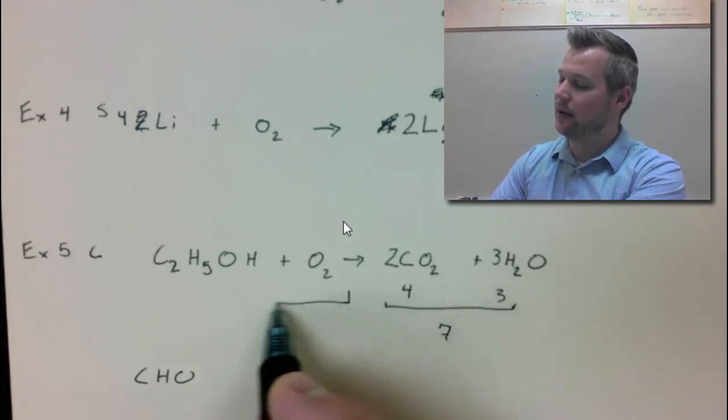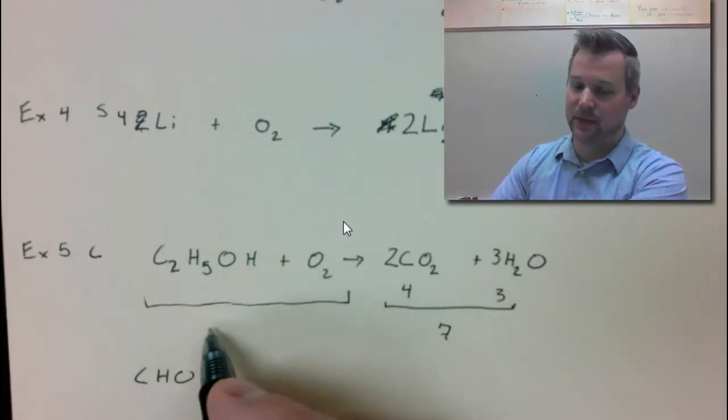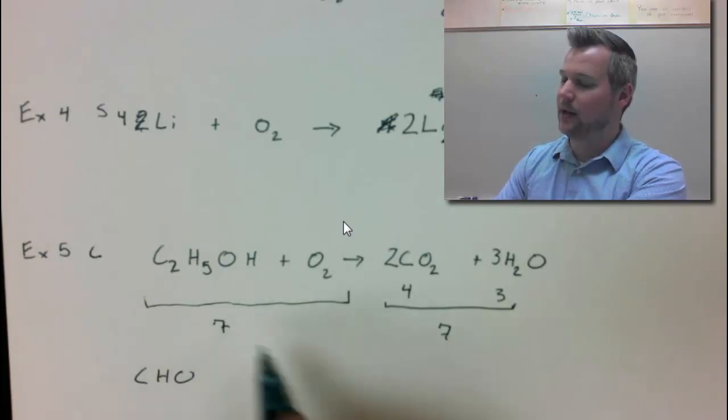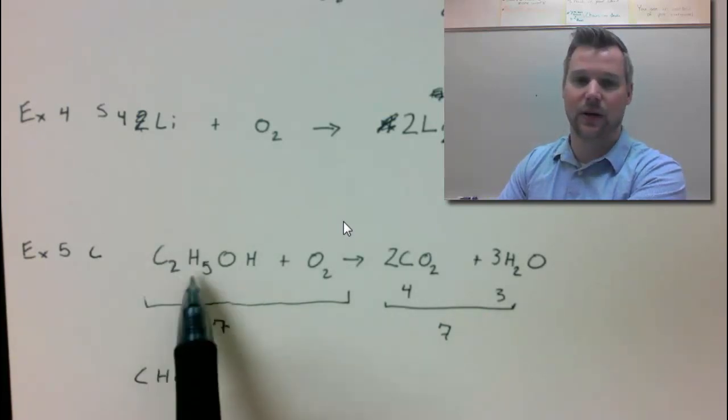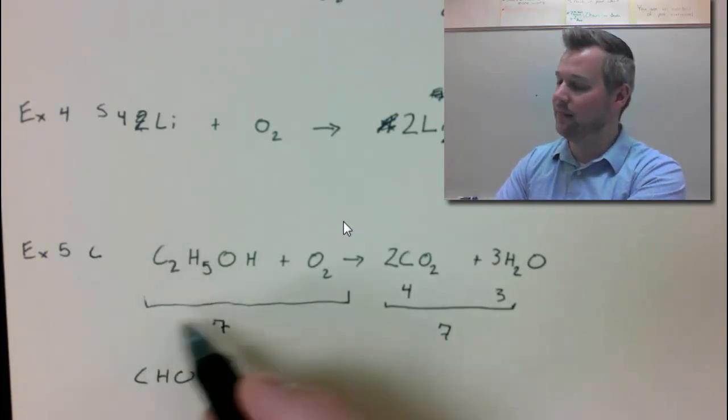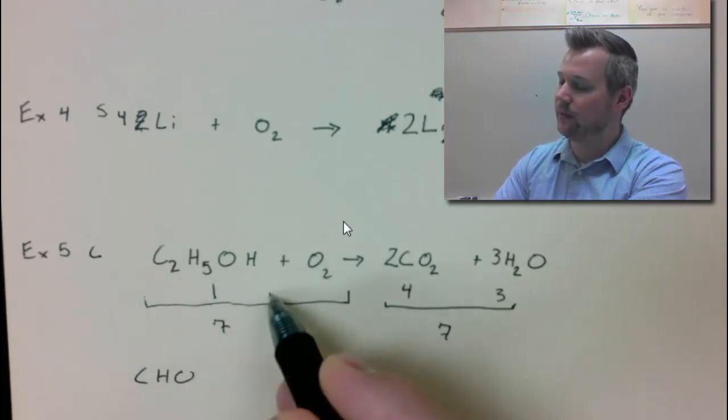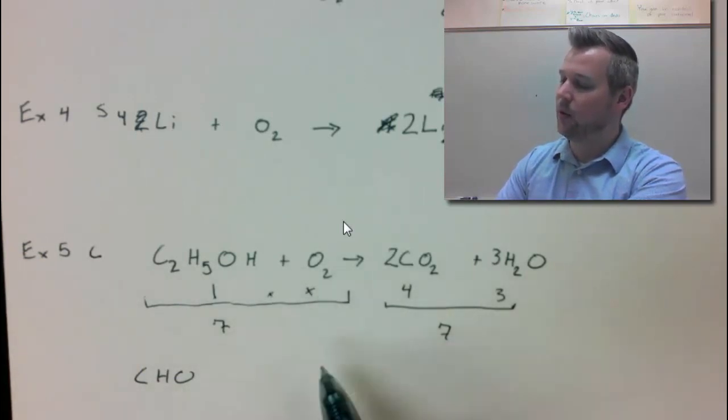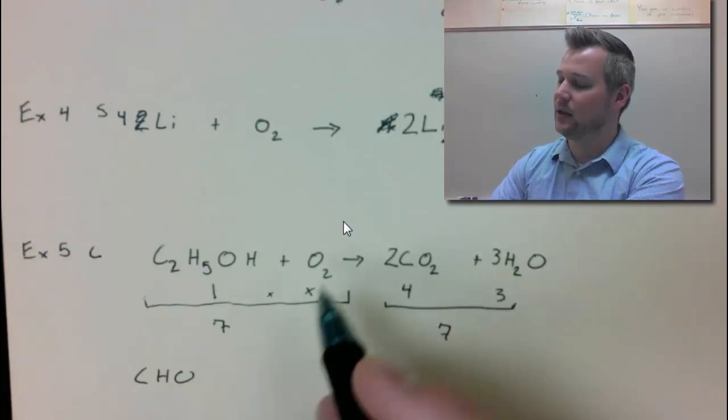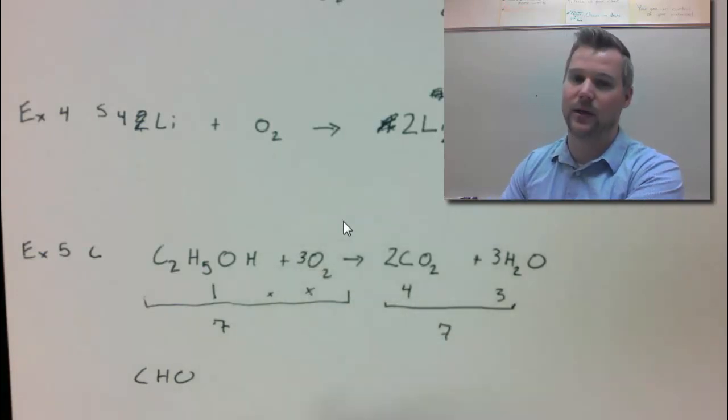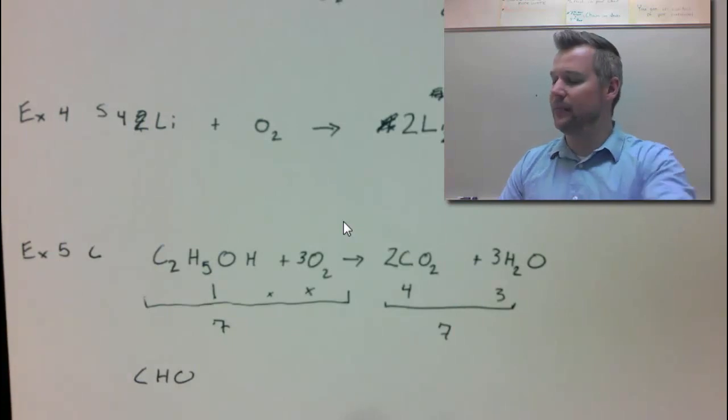So then on the left-hand side, all together, I have to have 7. So I'm going to write my 7 right here. Now, we don't want to put a coefficient in front of this, so let's just count how many O's we have. 1 plus the number X. So 1 plus X equals 7. What's X to make that happen? So X has to equal 6. So that is going to be a 3 times 2 gets me to 6.